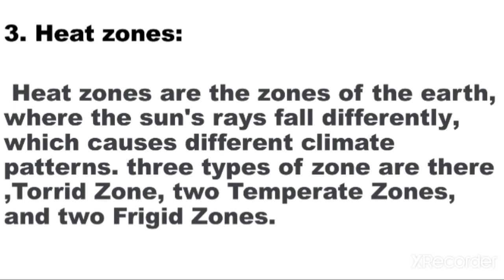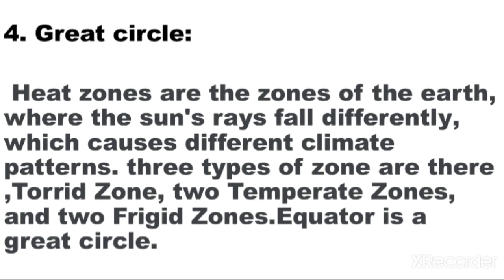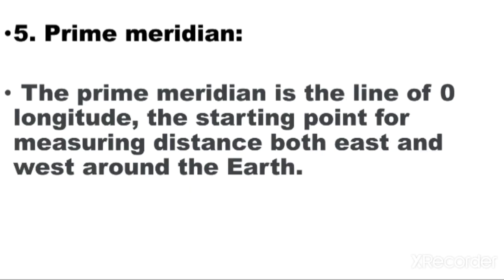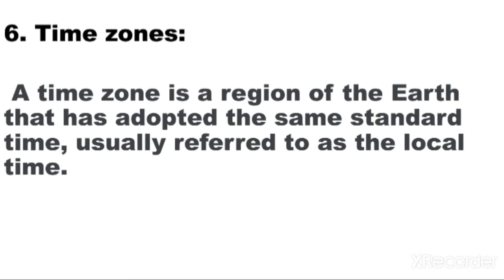Three types of zones are there: Torrid zone, two Temperate zones and two Frigid zones. Question number 4: Great Circle. The Equator is a great circle. Question number 5: Prime Meridian. The prime meridian is the line of 0 degree longitude, the starting point for measuring distance both east and west around the Earth. Question number 6: Time Zone. A time zone is a region of the Earth that has adopted the same standard time, usually referred to as the local time.